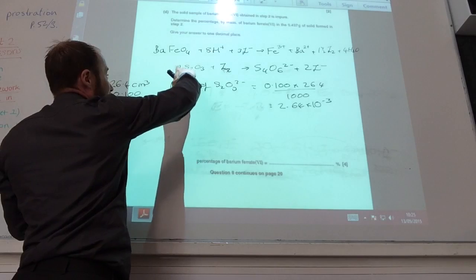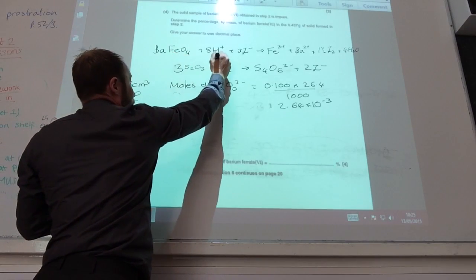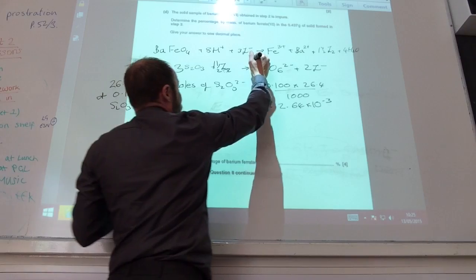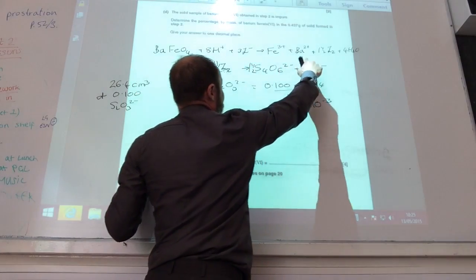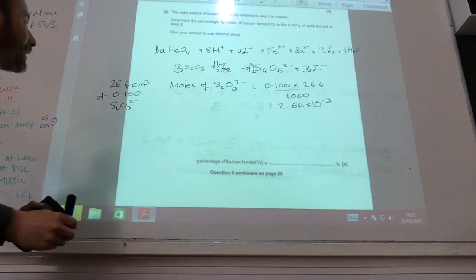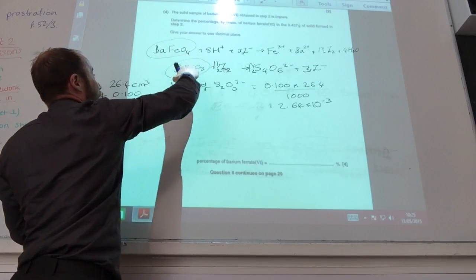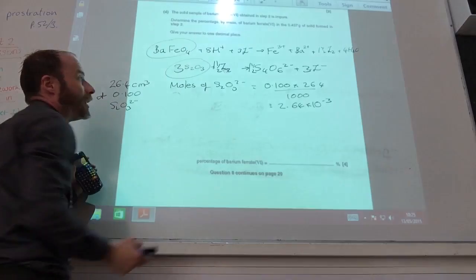And then I've got one and a half and a two. So I need to times it by one and a half. If I do that, two times one and a half is three. Now, I can relate thiosulfate to barium ferrite. What is the relationship between those two?